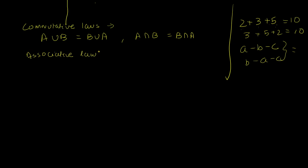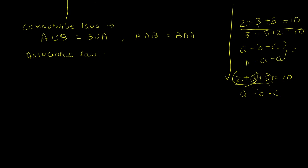The associative law talks about grouping and order of operations. For an operation to be associative, it should not matter how you group the operands. For example, (2+3)+5 equals 2+(3+5), both giving 10. Subtraction, however, is not associative. In set theory, (A union B) union C equals A union (B union C), and similarly for intersection.